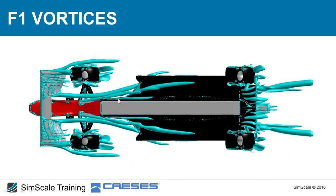From the underside, we can also see the T-tray vortex and strong leading edge vortices. These vortex cores are regions of low pressure, and when positioned underneath the car they create additional suction that helps the floor generate more downforce.